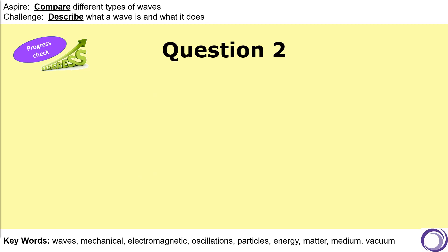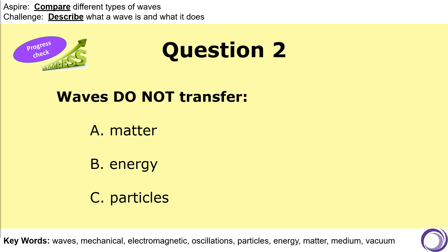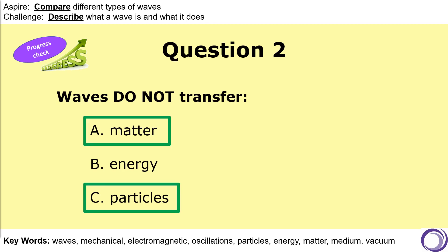Question two: what is it that waves do not transfer? Is it matter, energy, or particles? There are actually two correct answers to this question — A, matter, and C, particles — because matter is made of particles, and waves do not transfer matter.